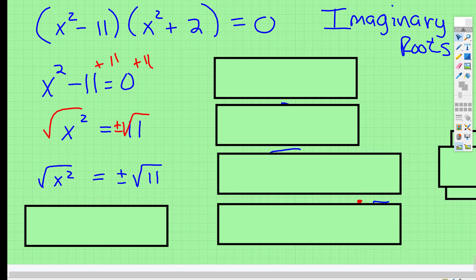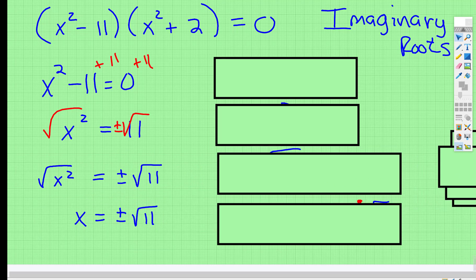So look at what happens. When you take the square root of that x, you have two possible answers. You have x is equal to negative root 11, and you have x is equal to positive root 11.